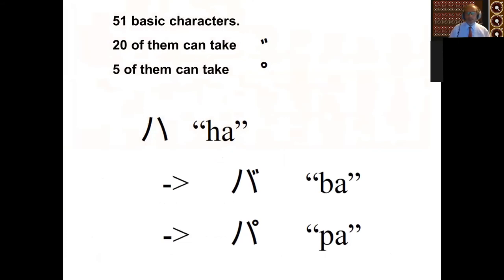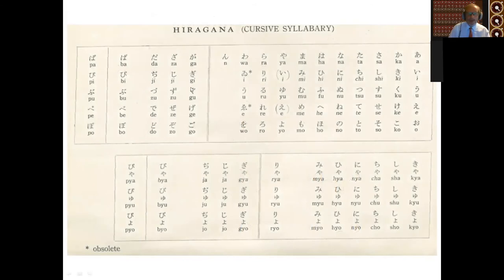51 basic characters of which 20 can take a double tick diacritic, and five can take a ring diacritic. And they affect the voicing and pronunciation of the basic syllables. So ha with the double tick diacritic is pronounced ba, and with the ring diacritic is pronounced pa. So we've now moved from 51 characters to rather more. So we've now included this section here as well.